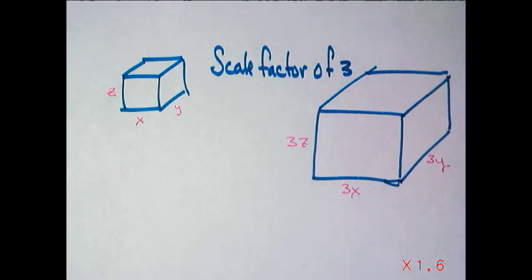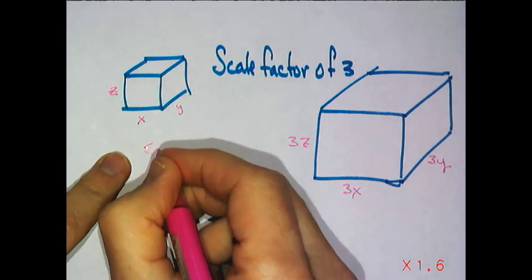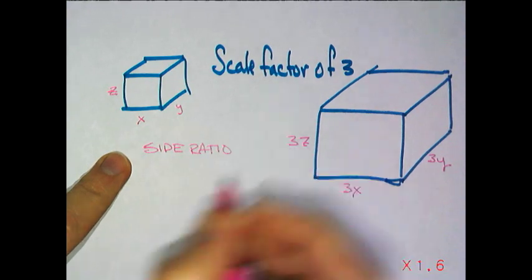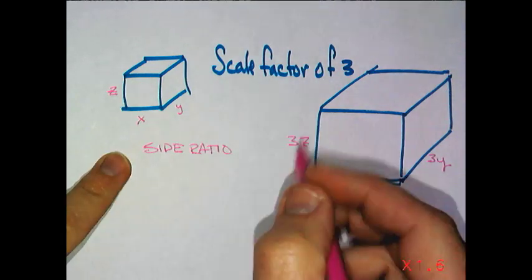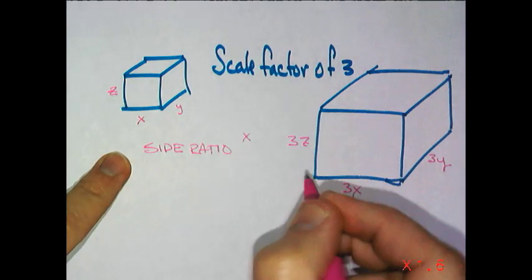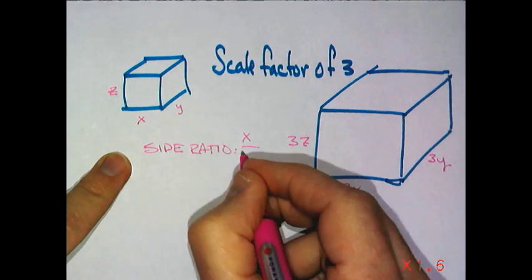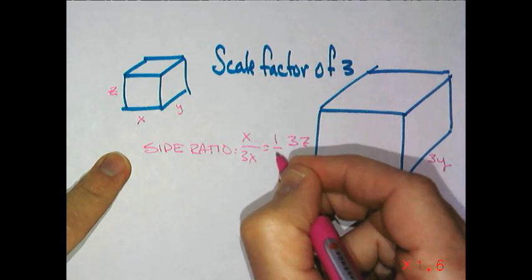One thing I'd like you to notice is if the scale factor is 3, the side ratio from the small to the big would be, let's just pick a side. A side of x, and this one would be 3x. So the side ratio would actually be 1 to 3.